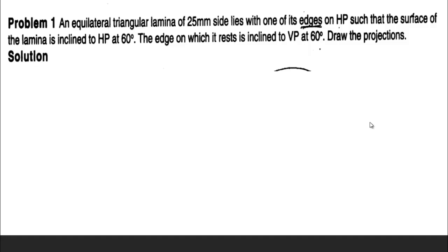an equilateral triangular lamina of 25 mm side lies with one of its edges on HP such that the surface of the lamina is inclined to HP at 60 degrees. The edge on which it rests is inclined to VP at 60 degrees. Draw its projection.